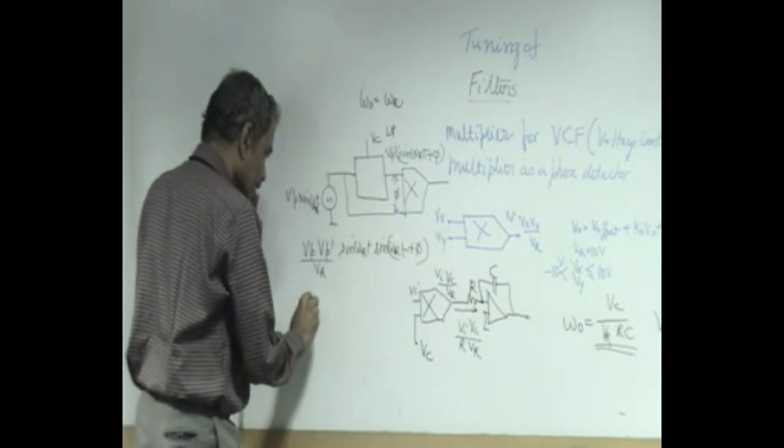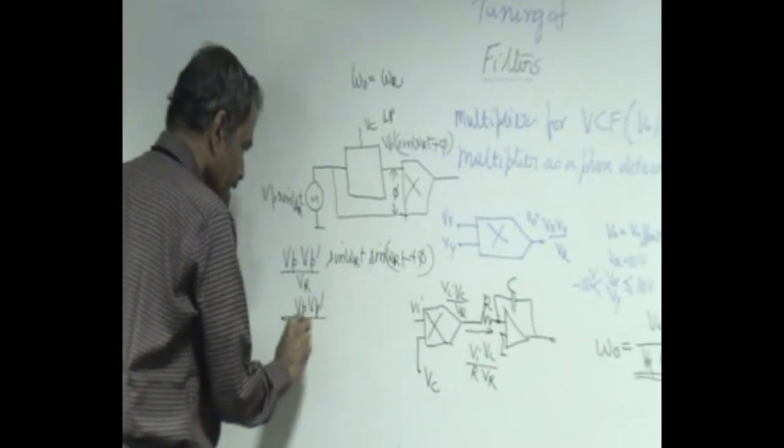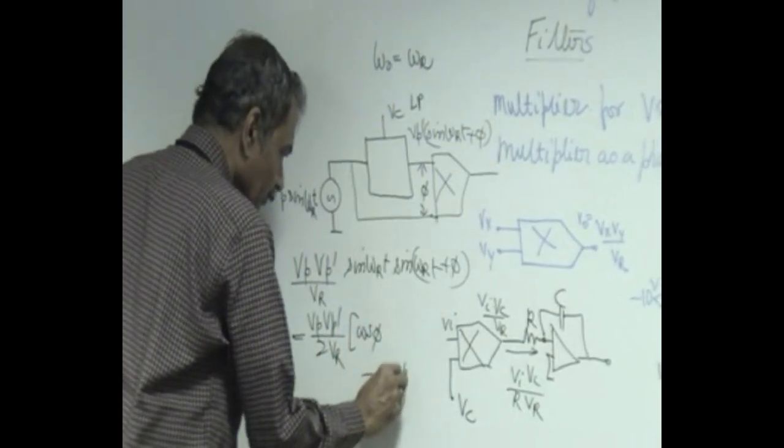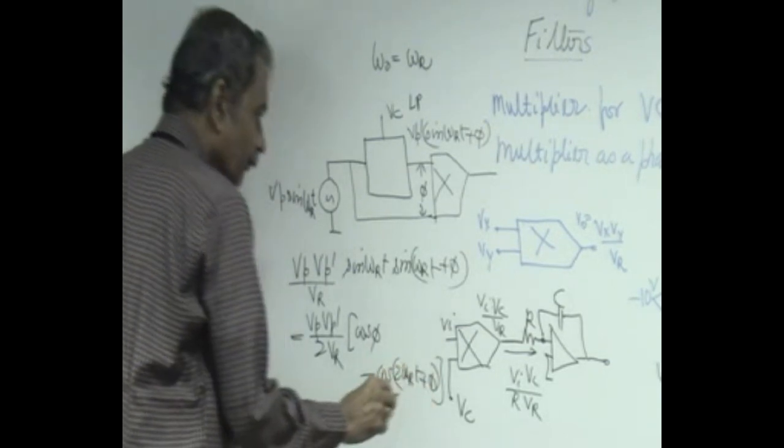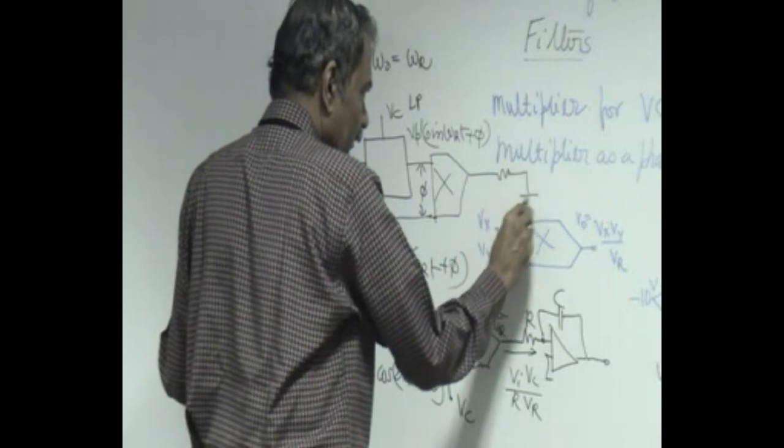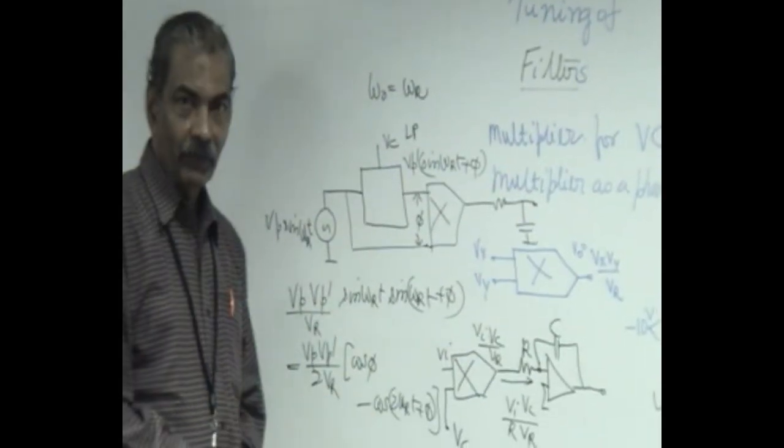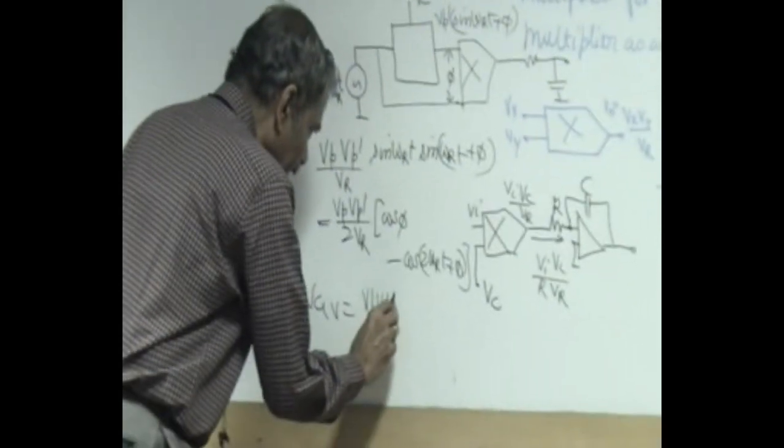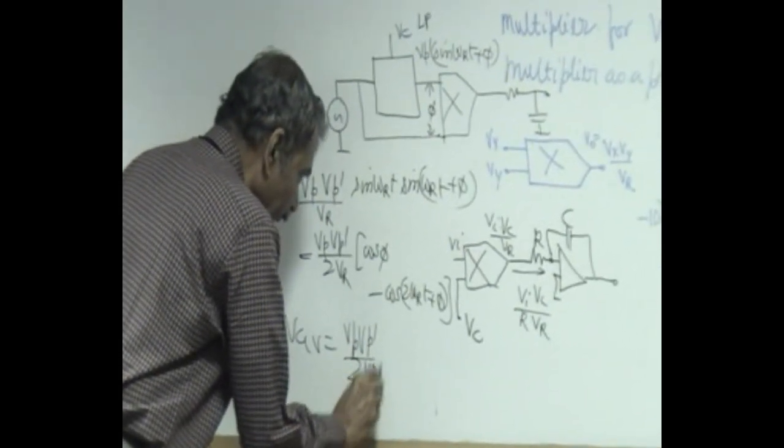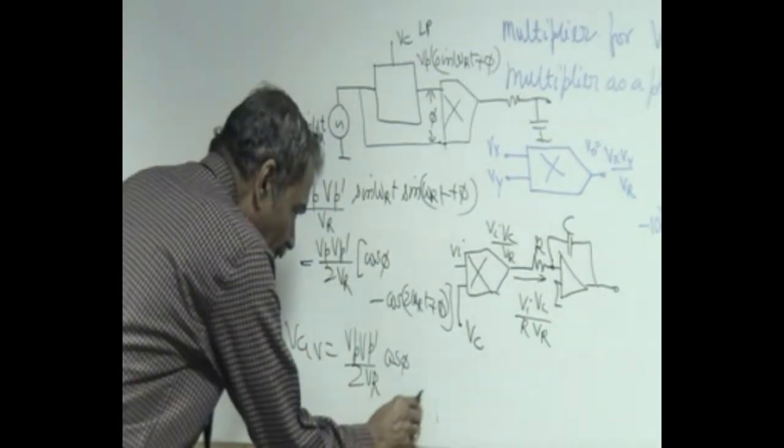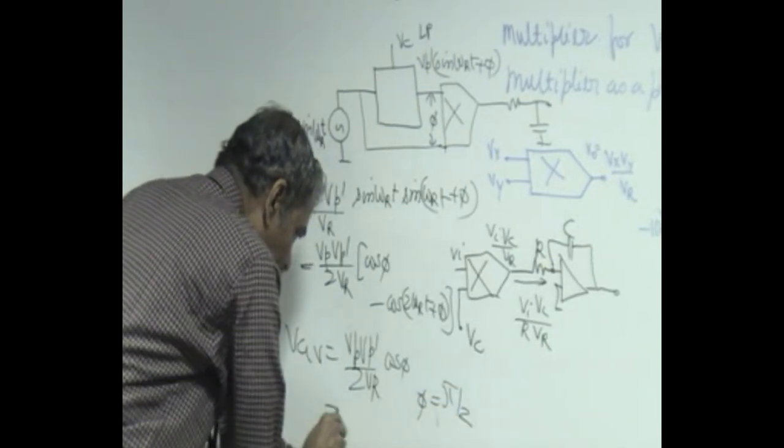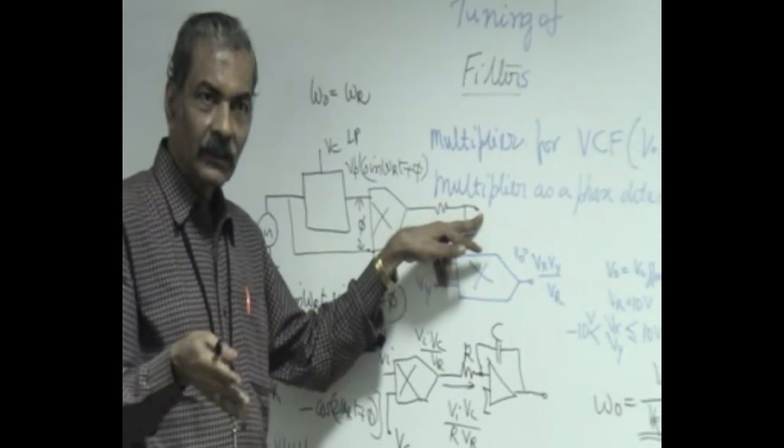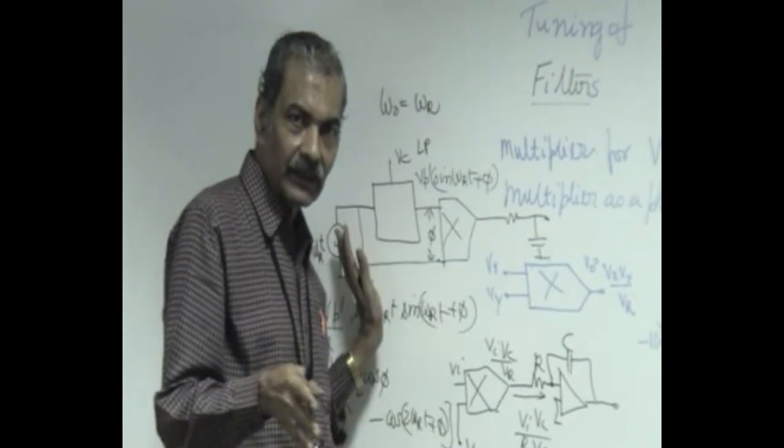And how do we get the information? We know that this output is nothing but v_p times v_p dash sin omega_r t times sin omega_r t plus phi divided by v_r. So, if you now expand this this is equal to v_p times v_p dash by 2 v_r into cos phi minus cos 2 omega_r t. By putting a low pass filter after this we can get rid of this 2 omega component and get an average which is nothing but proportional to cos phi. So, if phi is phi by 2 this average is equal to 0. So, the moment we measure 0 average we know that the filter is having this omega naught exactly tuned to omega_r which is the incoming frequency.